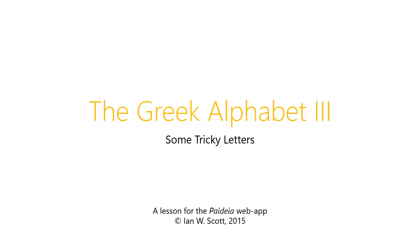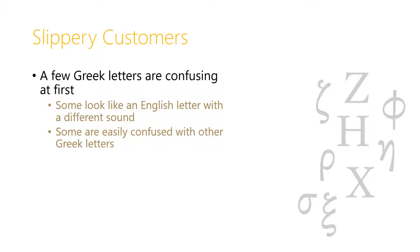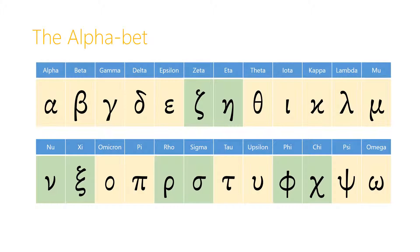Hello again and welcome back. By now, if you're using the Paideia web app to learn your Greek, you've just started into the second set of badges, and so it's time for us to begin learning the last of the letters of the Greek alphabet. These are some slippery customers. A few of the Greek letters are confusing at first. Here's the alphabet again — all of the letters we've already learned are highlighted in yellow, and the letters with a green background are the ones we're going to look at today.